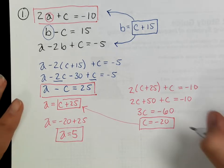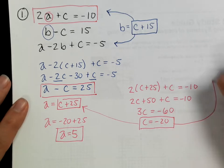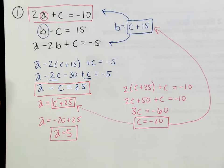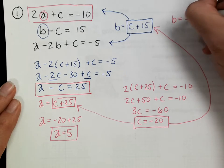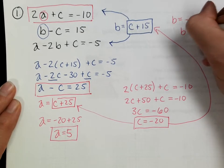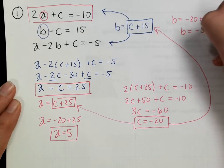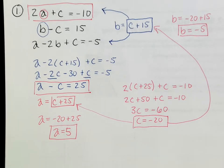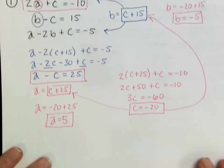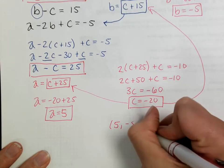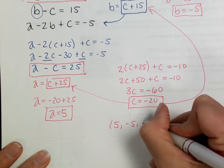I can also plug c = negative 20 into the b equation: b = negative 20 + 15, so b = negative 5. The solution can be written as an ordered triple (a, b, c).